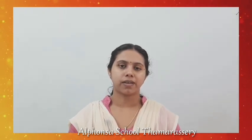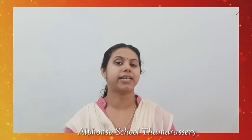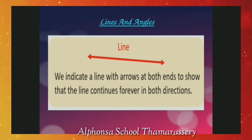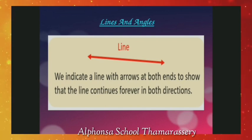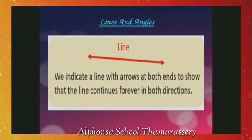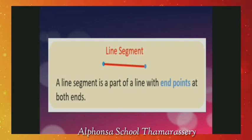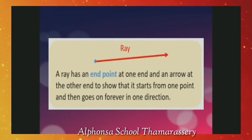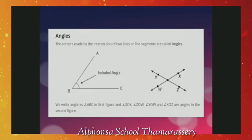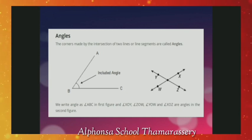Further, we will use these properties to prove some statements using deductive reasoning. Before that, let us recall the basic terms and definitions related to lines and angles that we studied in earlier classes. A line is a collection of points going endlessly in both directions along a straight path — a line has no endpoint. Points on the same line are called collinear points. A line segment is a part of a line which has two distinct endpoints. A ray is also a part of a line; it has one endpoint and goes on endlessly in one direction.